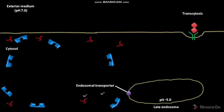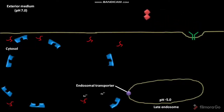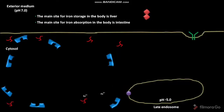At the neutral pH of the exterior medium, that is pH 7.0, the apotransferrin bound to the transferrin receptor is released into the exterior medium. The main site for iron storage in the body is the liver. The main site for iron absorption in the body is the intestine.